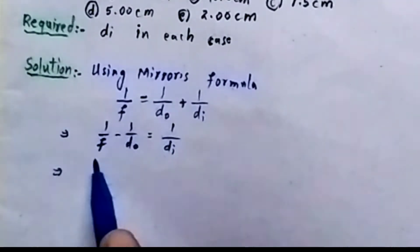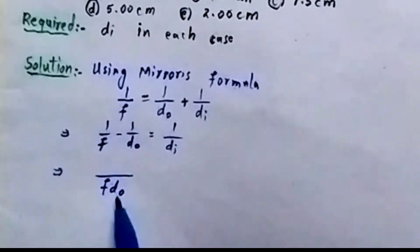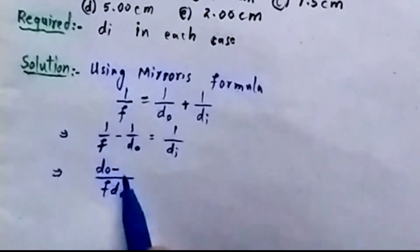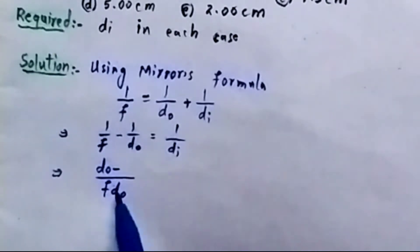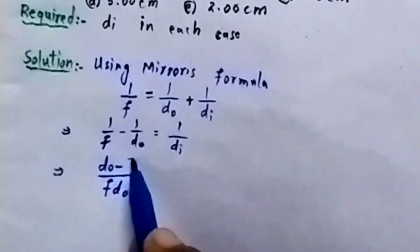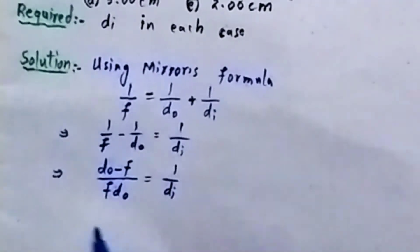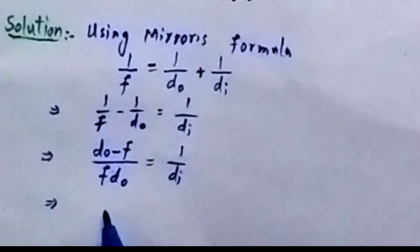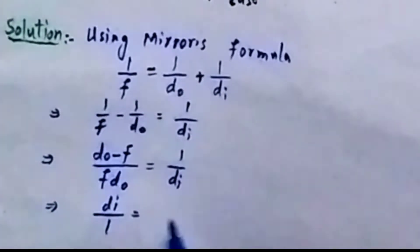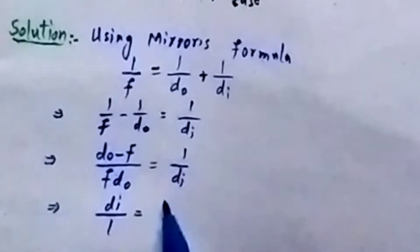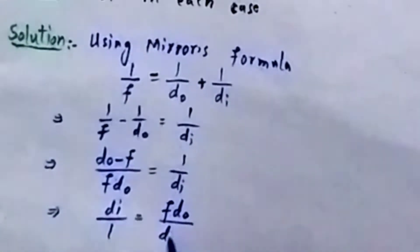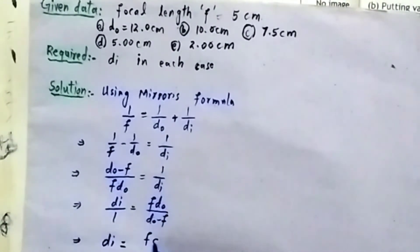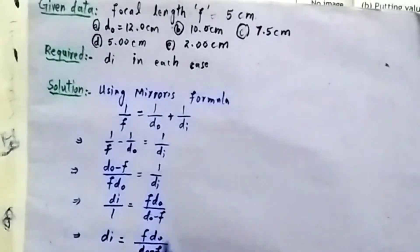Taking the LCM and simplifying: one over d-i equals (d-o minus f) divided by (f times d-o). Taking the reciprocal, the distance of image d-i equals f times d-o divided by (d-o minus f). This is the working equation we will use to solve all five cases.